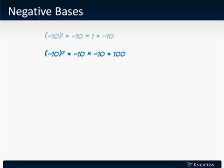We can generalize that to say that all second powers of negative numbered bases are going to be positive. Say we raise it to the next power: negative 10 to the third. Negative 10 times negative 10 times negative 10 gives us negative 1,000, because those two negative numbers we multiplied together to get a positive are now multiplied by a new negative number.